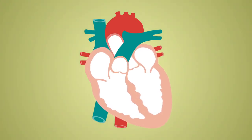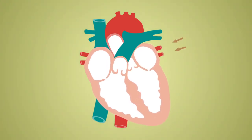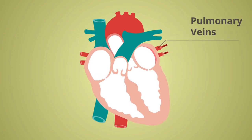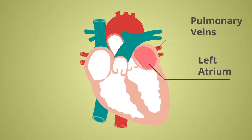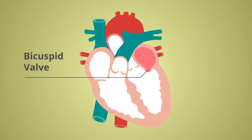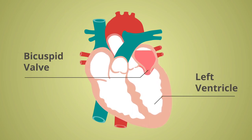The now oxygenated blood flows back from the lungs to the heart via the pulmonary veins and into the left atrium. The left atrium contracts, forcing blood through the bicuspid valve and into the left ventricle.